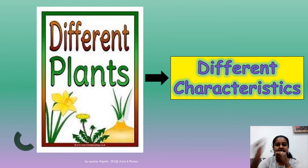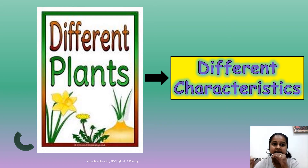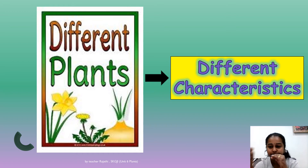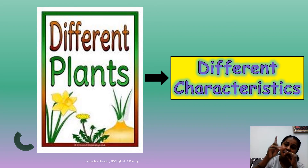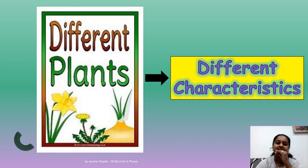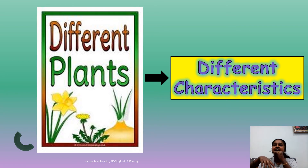So we have seen four different characteristics: type of leaf veins, type of roots, type of stem, and flowering or non-flowering. One more is fruiting plant and non-fruiting plant — fruiting means they have fruit you can eat, and non-fruiting means there is no fruit.